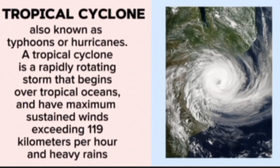Tropical cyclone, also known as typhoons or hurricanes. A tropical cyclone is a rapidly rotating storm that begins over tropical oceans and has maximum sustained winds exceeding 190 kilometers per hour.